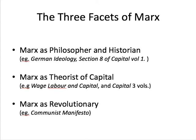Marx introduces the idea of base and superstructure. The base or substructure is the fundamental relations of production — for example, the relationship between a worker and his or her employer, the proletariat versus the bourgeoisie. The state, philosophy, and political ideology are superstructural. Politics, art, culture, philosophy, religion, ideas, and systems of thought all exist in the superstructure and are merely reflections of what is going on at the base.